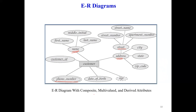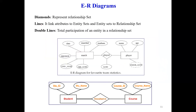In the ER diagram with composite, multi-valued, and derived attributes: name is a composite attribute consisting of first name, middle initial, and last name; address is a composite attribute consisting of street, city, state, and zip code; street consists of street number, street name, and apartment number. Phone number is multi-valued because a customer may have more than one. Age is a derived attribute — calculated from the date of birth.